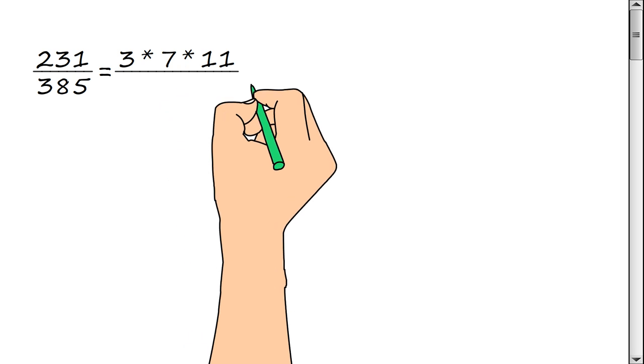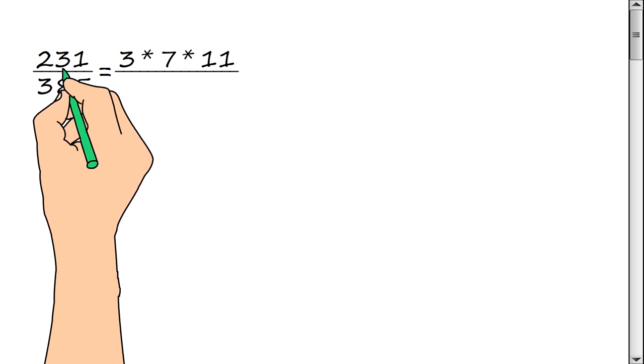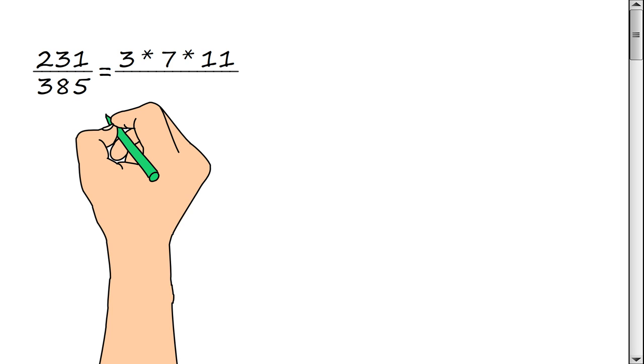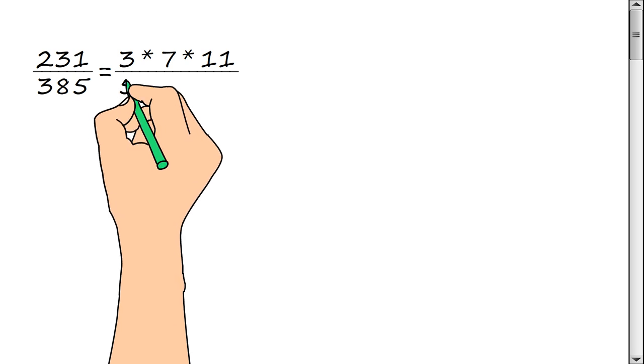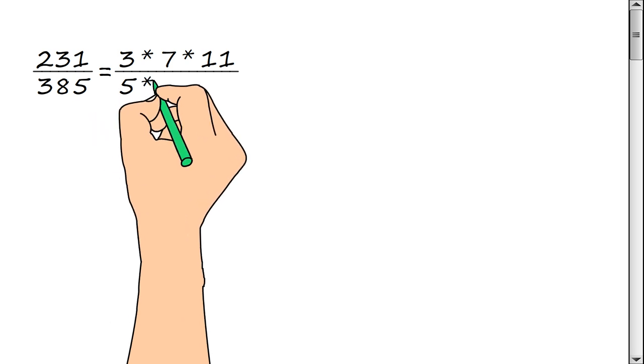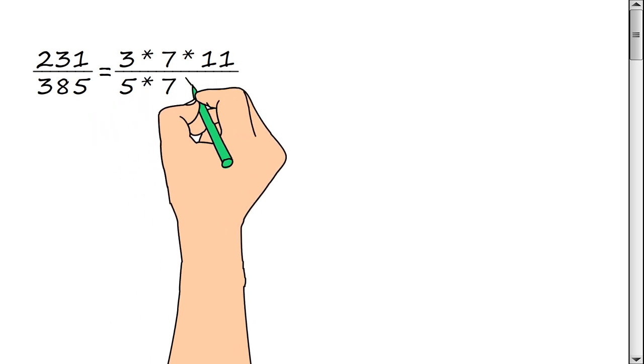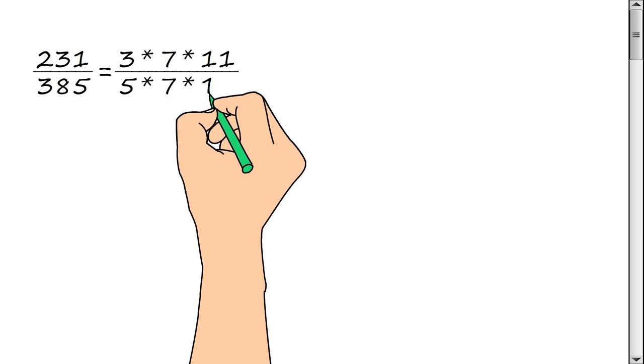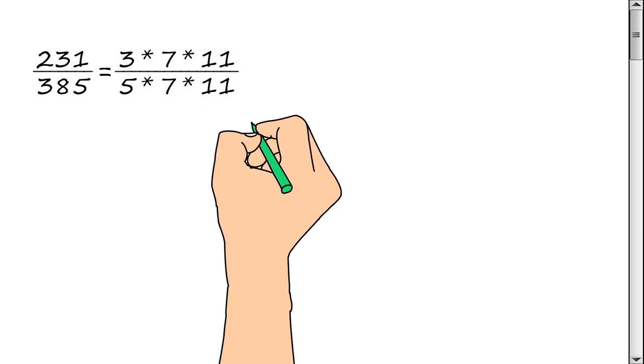Now we represent the denominator of a fraction as a product of prime factors: 5, multiply by 7, multiply by 11.